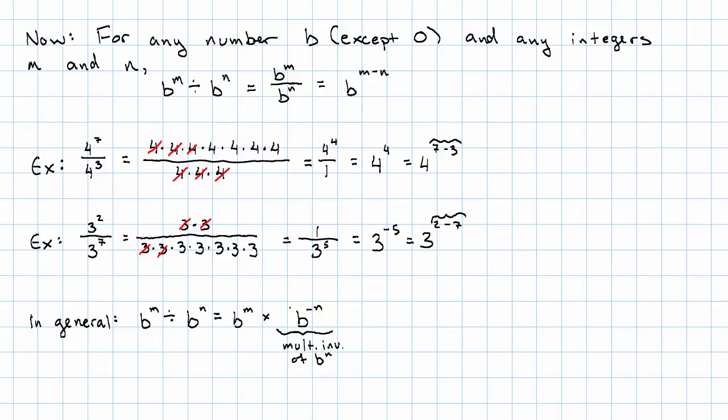Okay, but now we're multiplying, right? That's b to the m plus negative n. Okay, plus the opposite. That's subtraction. That's how we get b to the m minus n.